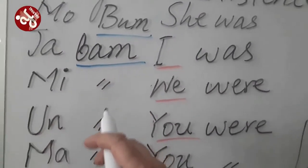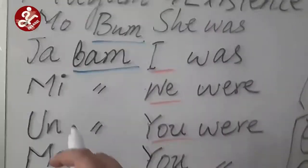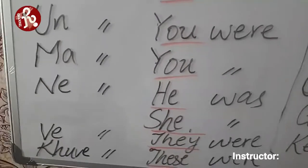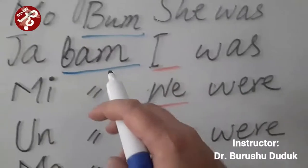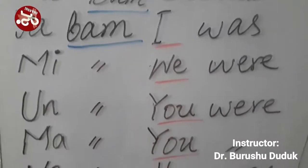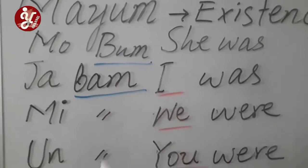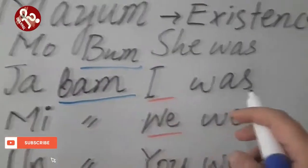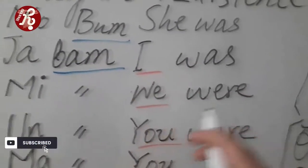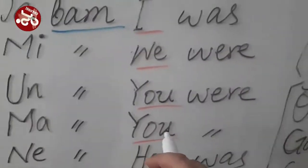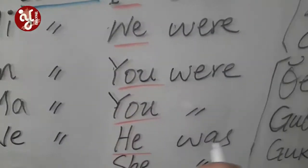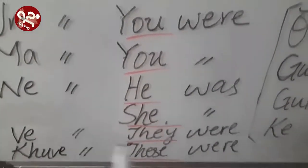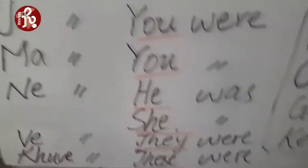Then for the rest of the pronouns, Boom is the same for all. Ja Boom: I was. Mi Boom: we were. Un Boom: you were. Ma Boom: you were. Ne Boom: he was. We Boom: they were. Kwe Boom: these were. So we use Boom for all the pronouns, and only for Mo — for female — we also use Boom.